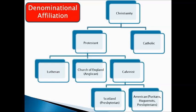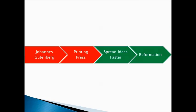Some of the denominational affiliations you'll now find in Europe: they're all Christians, with two major branches — Catholics and Protestants. Under Protestants, you get Lutherans, the Church of England or Anglicans, and Calvinists. Under Calvinists, you get Presbyterians in Scotland, and in the United States, the Puritans, Huguenots, and Presbyterians. Johann Gutenberg is also a key figure during the Reformation, not for himself but for what he invented — the printing press. It allowed the ideas of Martin Luther, John Calvin, and John Knox to spread quickly, which had a direct role in causing the Reformation.